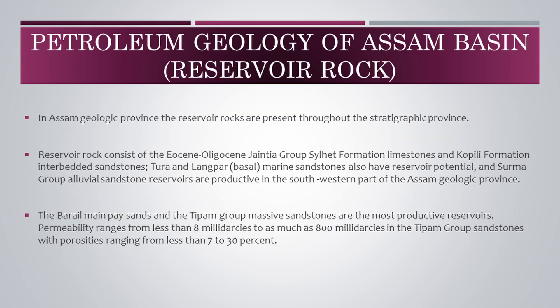After source rock, let's know about reservoir rock. In the Assam Geologic Province, reservoir rocks are present throughout the stratigraphic section. Reservoir rocks consist of the Eocene-Oligocene Jaintia group Silet formation limestones and Coppili formation interbedded sandstones, Tura and Langpur basal marine sandstones, which also have reservoir potential. Surma group alluvial sandstone reservoirs are productive in the southwestern part of the province. The Barail main paste sands and the Tipam group massive sandstones are the most productive reservoirs. Permeability ranges from less than 8 millidarcies to as much as 800 millidarcies in the Tipam group sandstones, with porosities ranging from less than 7 to 30 percent.